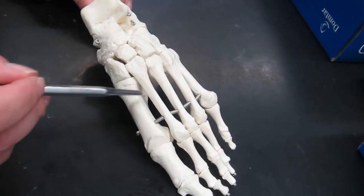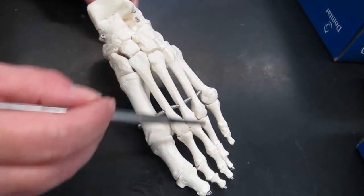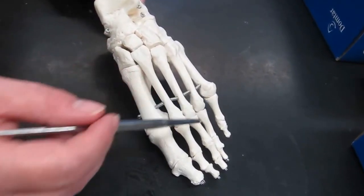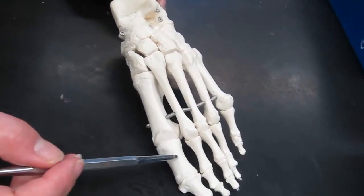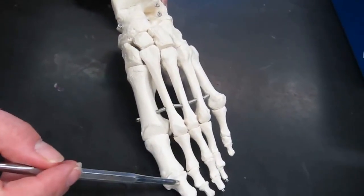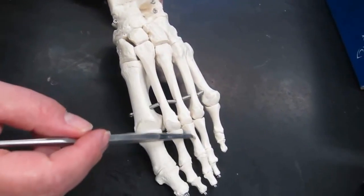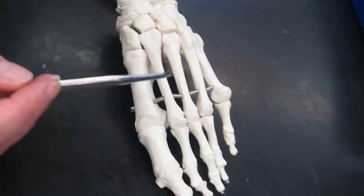Then we have the metatarsals, one, two, three, four, and five. Then we have the phalanges, similar to the thumb. The hallux or great toe has only two phalanges. All of the other digits have three: proximal, middle, and distal.